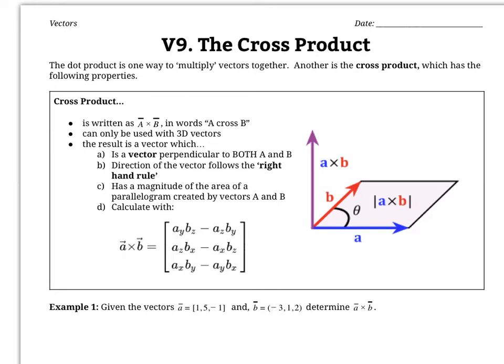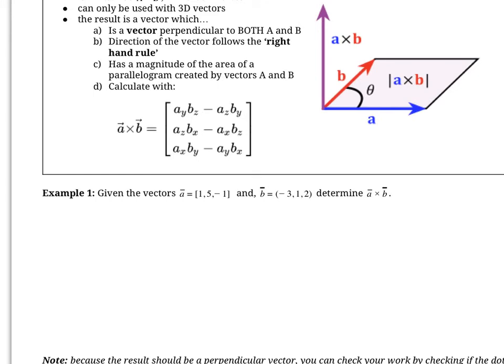This formula to take the cross product looks incredibly complicated, and it is. When we take the cross product of two vectors, we end up with a vector as the answer. A and B are the two original vectors: AY times BZ minus AZ times BY gives us the X component, the next part gives us the Y component, and the last part gives us the Z component.